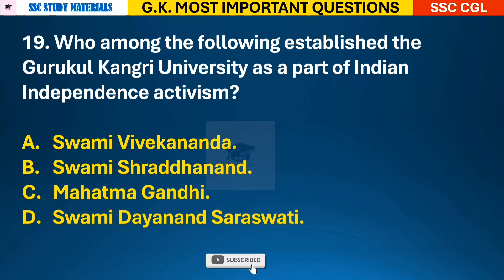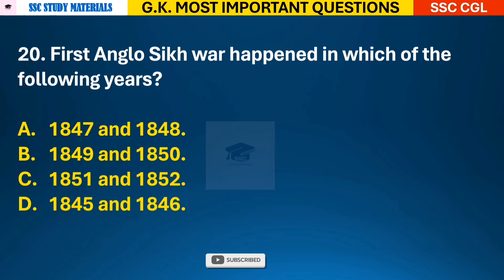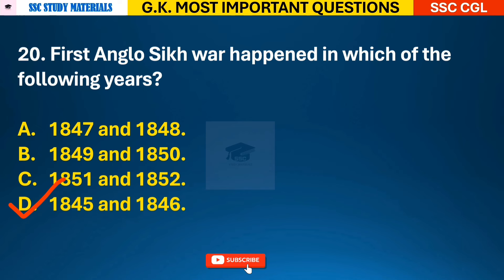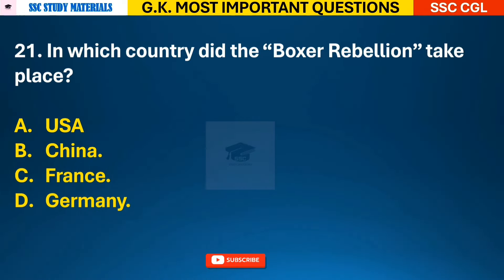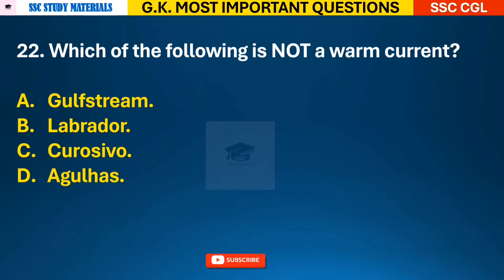Question 19: Who among the following established the Gurukul Kangri University as a part of Indian independence activism? Answer B - Swami Shraddhanand. Question 20: First Anglo-Sikh War happened in which of the following years? Answer D - it happened in the years 1845 and 1846. Question 21: In which country did the Boxer Rebellion take place? Answer B - China.